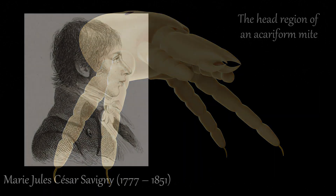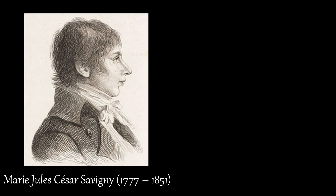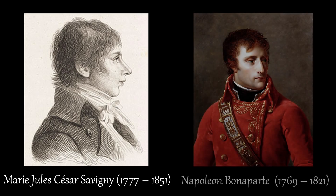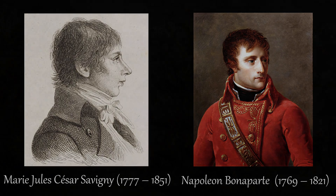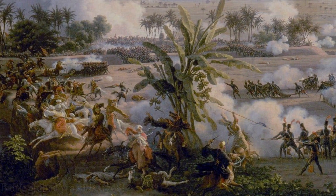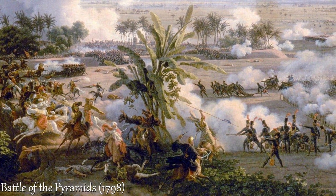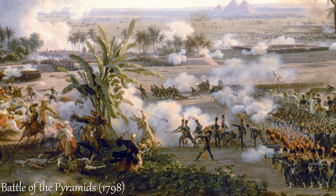One of the first biologists to address this subject was Marie-Jules César Savigny. At the age of 21, Savigny accompanied Napoleon Bonaparte on his famous campaign in Egypt and Syria — a military and scientific campaign for establishing French dominance in the Middle East.